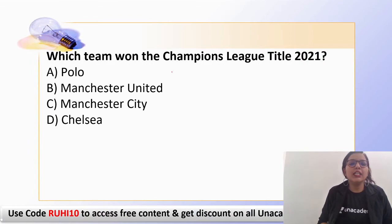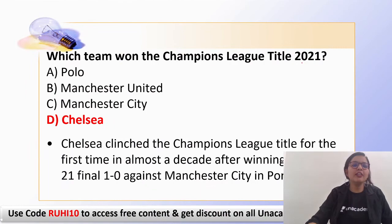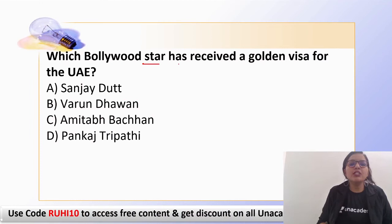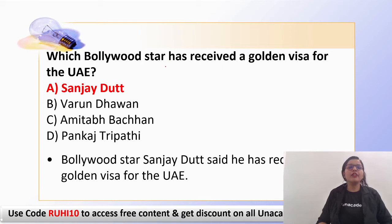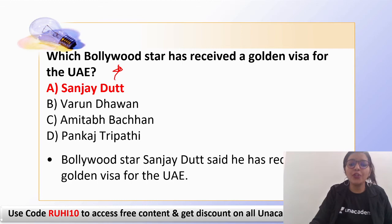Which team won the Champions League title 2021? The answer is Chelsea. Next: which Bollywood star received a golden visa for UAE? The answer is Sanjay Dutt. Bollywood star Sanjay Dutt has received a golden visa for the United Arab Emirates — a very important current affairs point to remember.